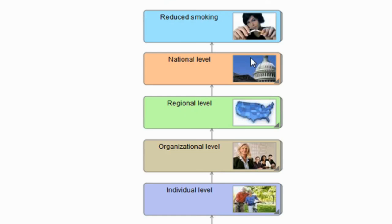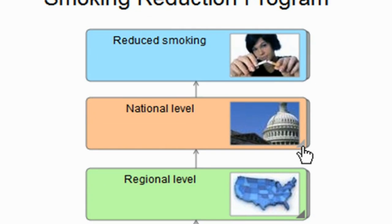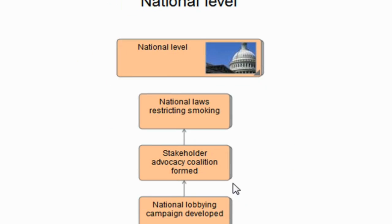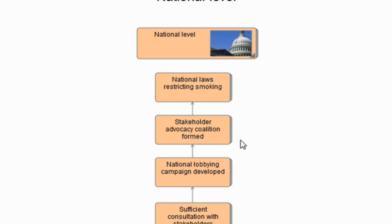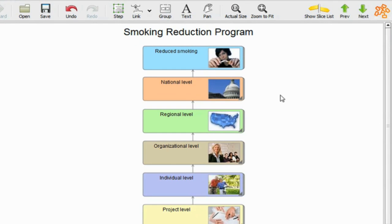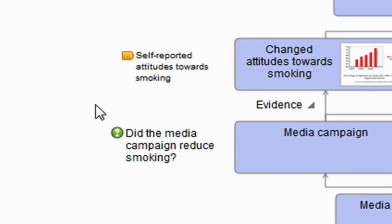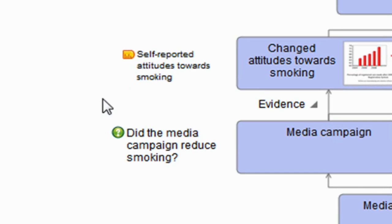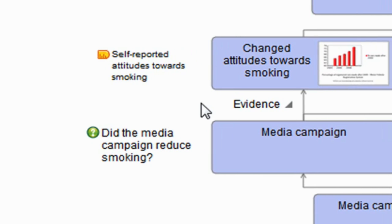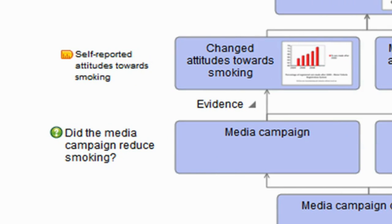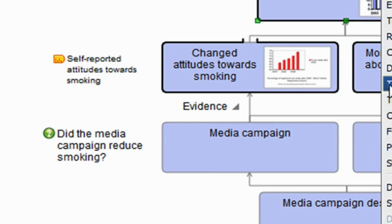And then lastly, we have a national level where we may have a group of stakeholders forming an advocacy coalition to implement national laws to restrict and reduce smoking. So you can see once we have a model like this—and I'll be talking in other videos about how we can use it—we have plenty of space in which we can put additional aspects onto the model, for instance indicators, evaluation questions, or the evidence which is related to links between the steps within the model.